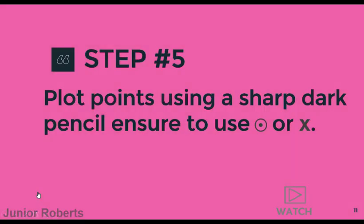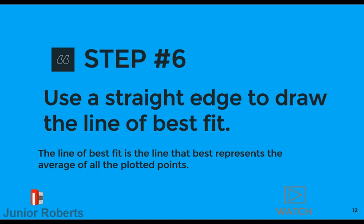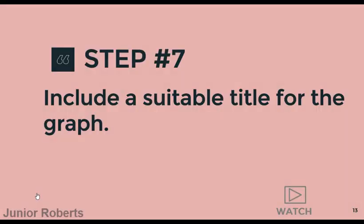After plotting our points, step six requires us to use a straight edge to draw the line of best fit, defined as the line that best represents the average of all the plotted points. We take our straight edge, place it along the points, and draw our line of best fit — this line here. Because our points are perfectly placed, we get a very good line of best fit.